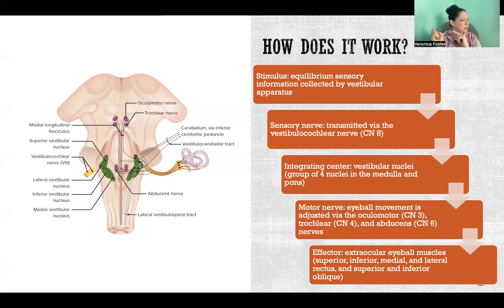These are carrying the motor commands to the muscles that move the eyeball so that they can move opposite of the movement of the head. The effectors in that case are the extraocular eyeball muscles - superior, inferior medial, and lateral rectus, and superior and inferior obliques. Those are our six extraocular eyeball muscles. They are skeletal muscles, which means that this is a somatic reflex.